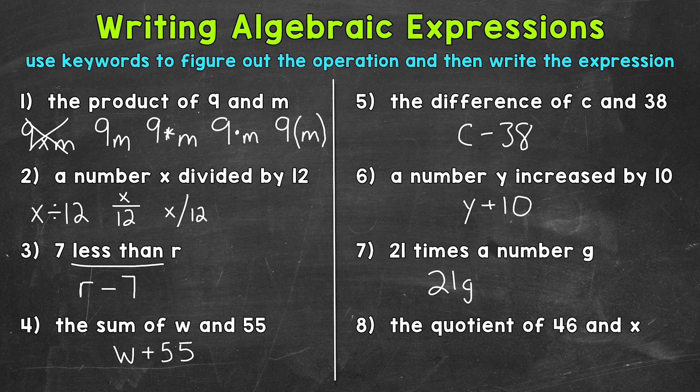Lastly, number eight, the quotient of 46 and X. Now quotient is our keyword. It means the answer to a division problem. So this is going to be division 46 divided by X. So let's represent this using a fraction. And this is a division problem 46 divided by X.